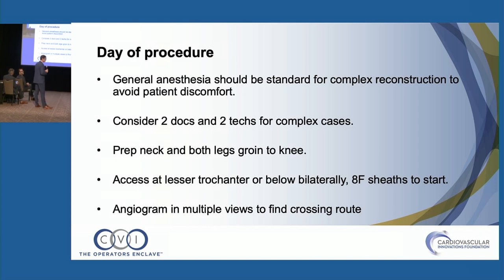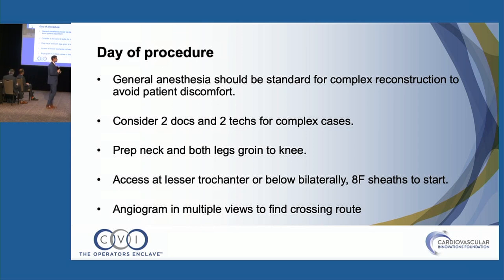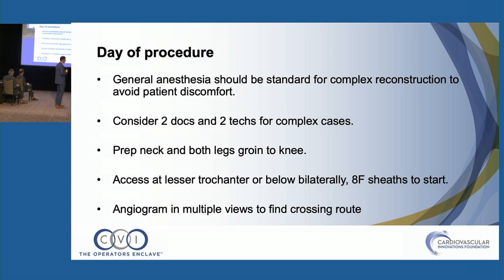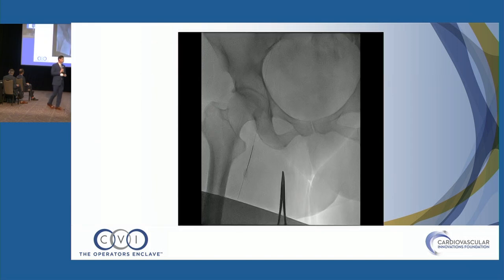Always access at the lesser trochanter or below to give plenty of running room to place your sheath and begin wiring, and you'll need access to the whole common femoral vein since you commonly must extend your stent to the takeoff of the profunda. Once in, take anterograms in multiple views to find the appropriate route for wiring — venous disease is far more complex than arterial. If your needle is above the lesser trochanter on fluoro, re-access. Use O35 support catheters such as NaviCross or CXI, and the gamut of glide wires; the straight glide wire is particularly helpful.